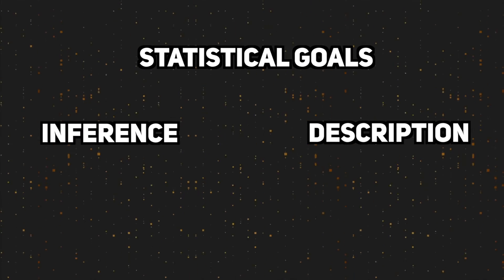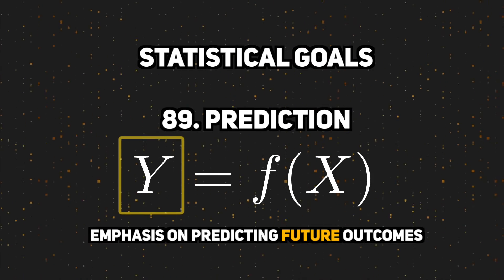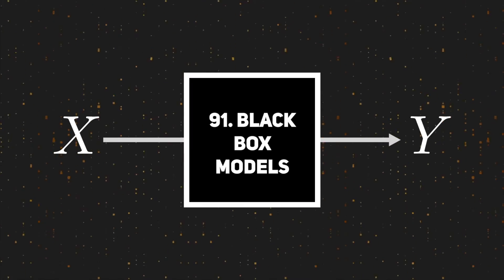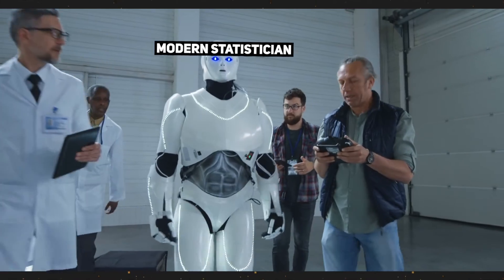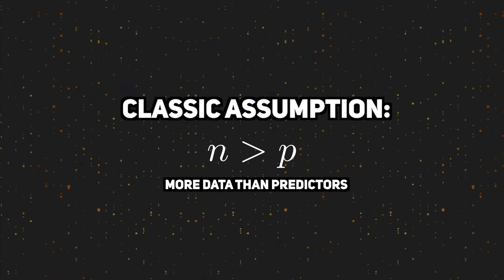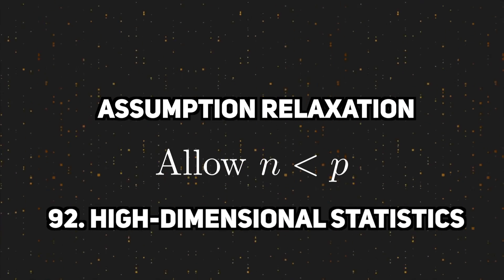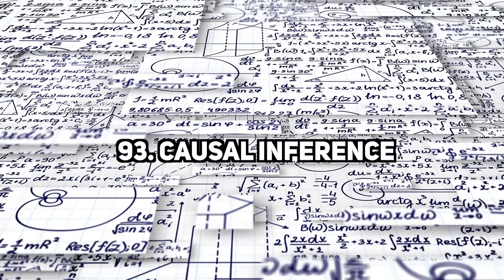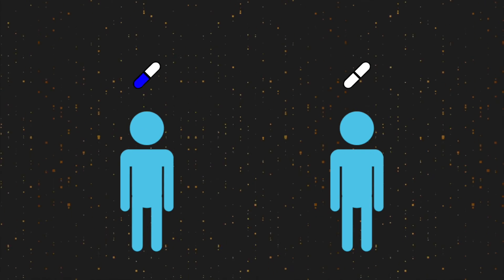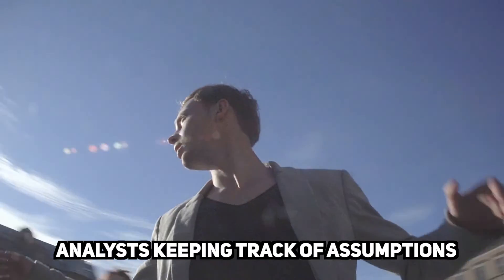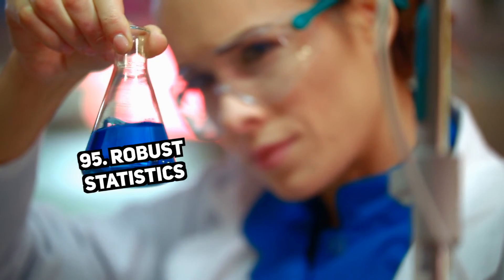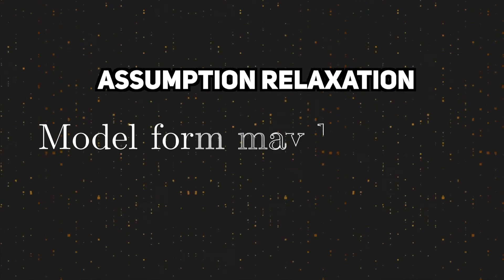Inference and description are not the only statistical goals. There's also prediction, where we try to predict the value of a future observation based on a model we've estimated. This starts to venture into the field of machine learning, where you'll start to see black-box models. Modern statisticians deal with very specific but exciting modeling problems. In fields like genetics, the number of predictors can far exceed the sample size, so we need high-dimensional statistics. Another exciting area is causal inference, which encompasses techniques that allow us to make causal statements from observational data — one pivotal idea here is the counterfactual framework. Some researchers also develop robust statistics that enable proper inference even when model assumptions are violated.